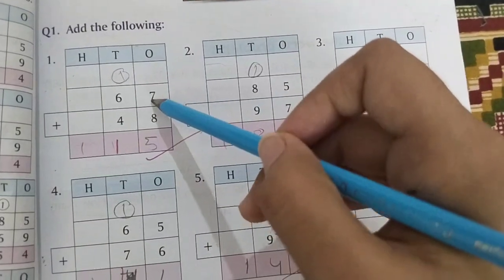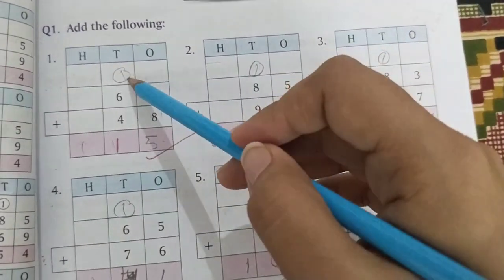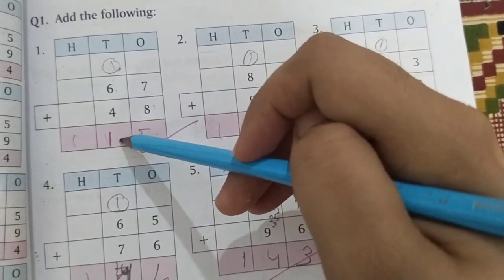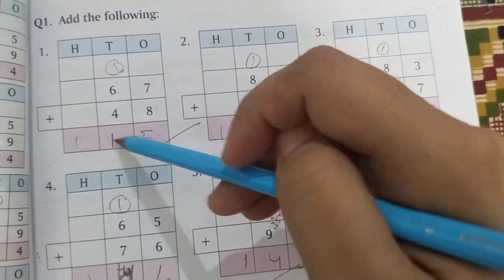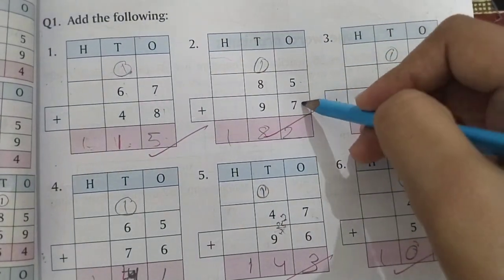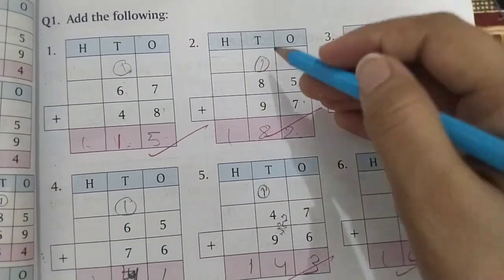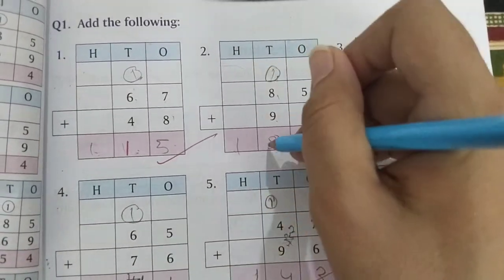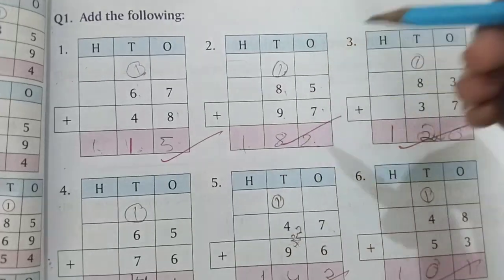So 7 plus 8 is 15, 1 will go here, 1 plus 6 plus 4 is 11. So 11 we have written here. 5 plus 7 is 12, 1 will go at the top, 1 plus 8 plus 9 is 18, 1 will write here at the hundreds place.